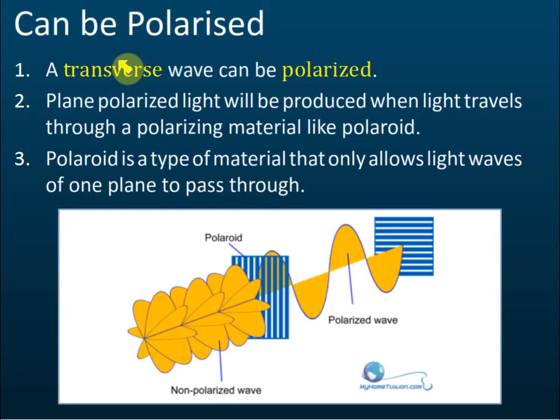From the experiment we learned that electromagnetic waves can be polarized, and only transverse waves can be polarized. So if electromagnetic waves can be polarized, it means electromagnetic waves are transverse waves. This is the proof that electromagnetic waves are transverse waves. And since light is an electromagnetic wave, light is also a transverse wave.